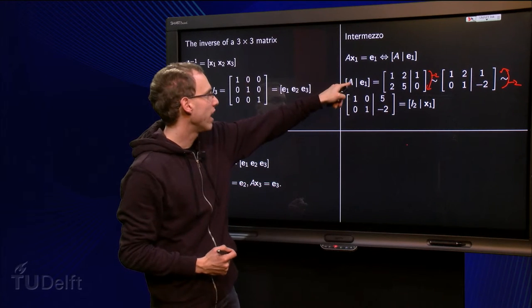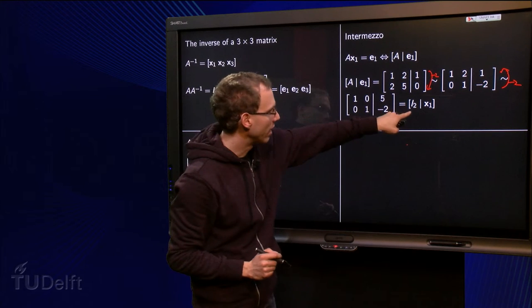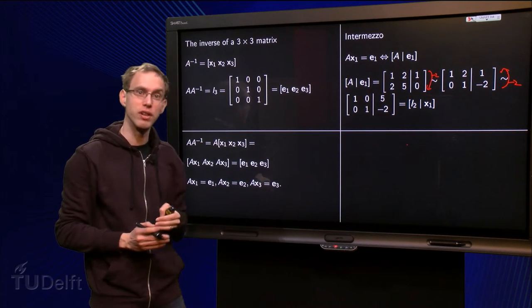We started with A augmented with e1. We did some row reductions. Finally we got the identity matrix on the left, and x1 our solution after the bar.